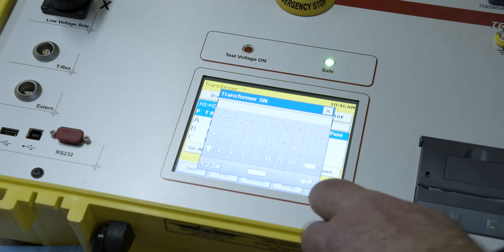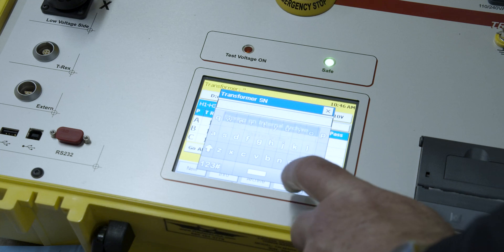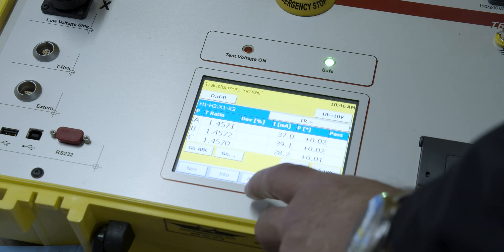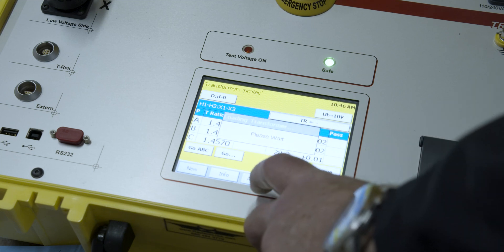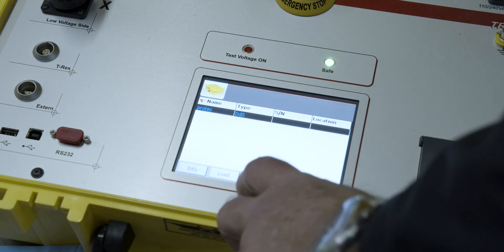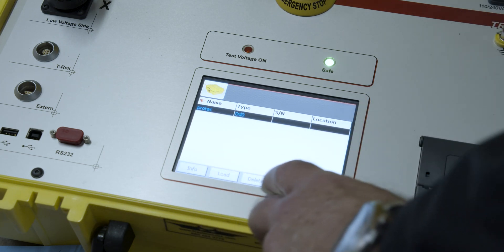I'm just not going to put that in at this time but you'll notice at the top that the transformer is now labeled protec. We can go into archive and you'll see that it's the only test results in there and if we select all we could have just touched the one or select all and then we can recall that.